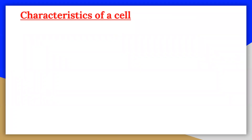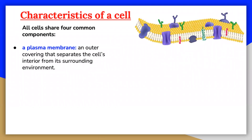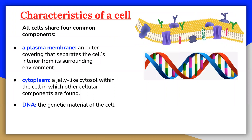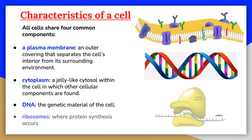These include a cytoplasm, a gel-like substance composed of water and dissolved chemicals, which is contained within the plasma membrane, also called a cell membrane. They also include one or more chromosomes, which contain the genetic blueprint of the cell, and ribosomes, organelles used for the production of proteins.